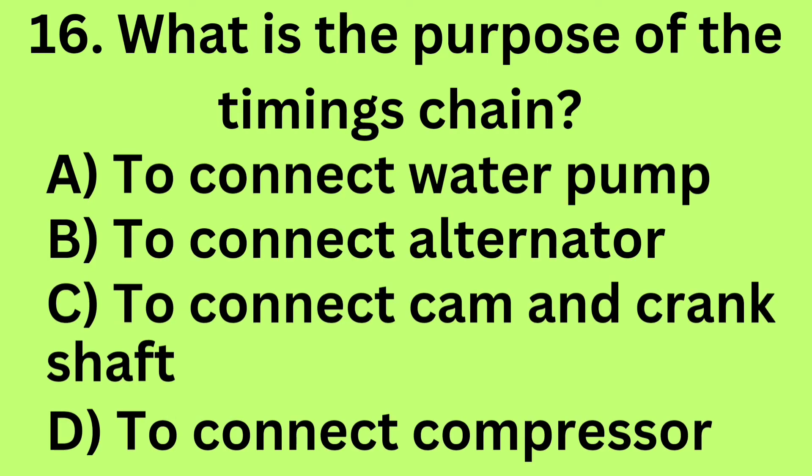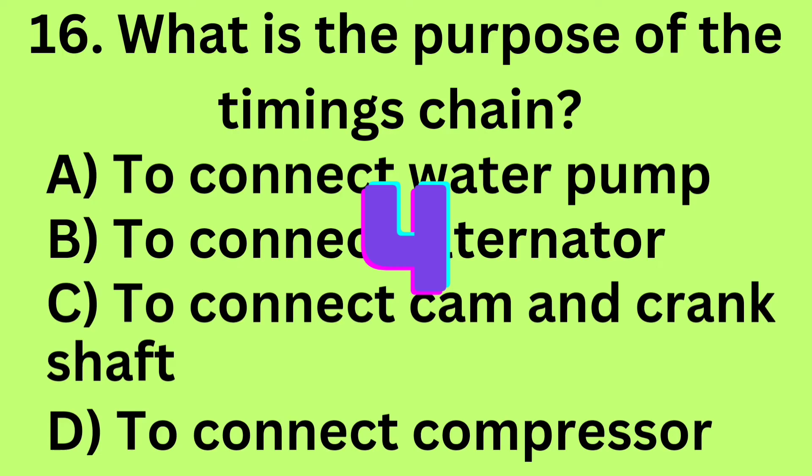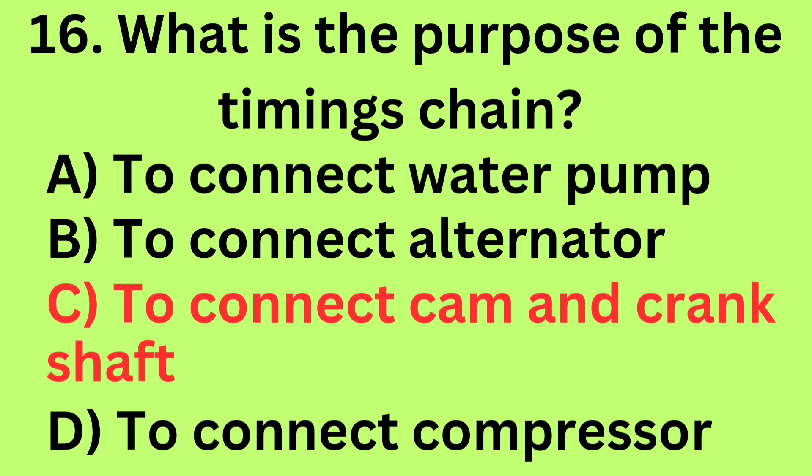Question 16: What is the purpose of the timing chain? A. To connect water pump, B. To connect alternator, C. To connect cam and crankshaft, D. To connect compressor. Answer: C. To connect cam and crankshaft.